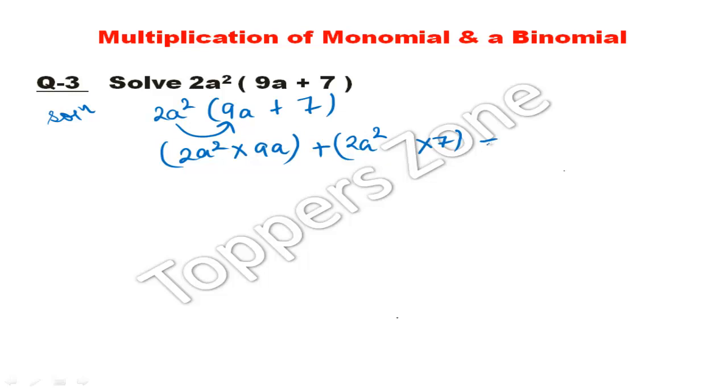2 into 9, and the a power is a² into a. Then 2a² into 7 is 14a². The solution is 18a³ plus 14a². That's the answer.